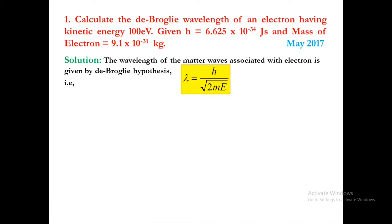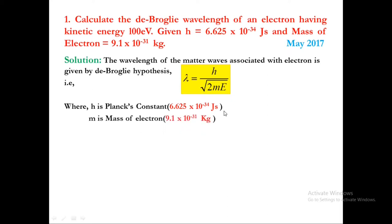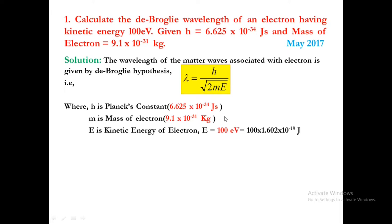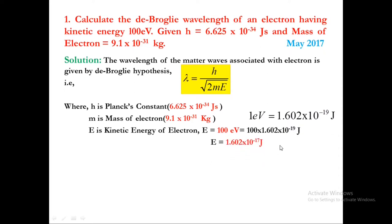H is Planck's constant, its value is given. M is mass of electron, its value is given, and E is the kinetic energy of the electron, which in this case is 100 electron volts. Since the units of h and m are in SI units, we have to convert electron volts into joules because joule is the SI unit of energy. For that, we multiply by 1.602 into 10 power minus 19, giving E as 1.602 into 10 power minus 17 joules.